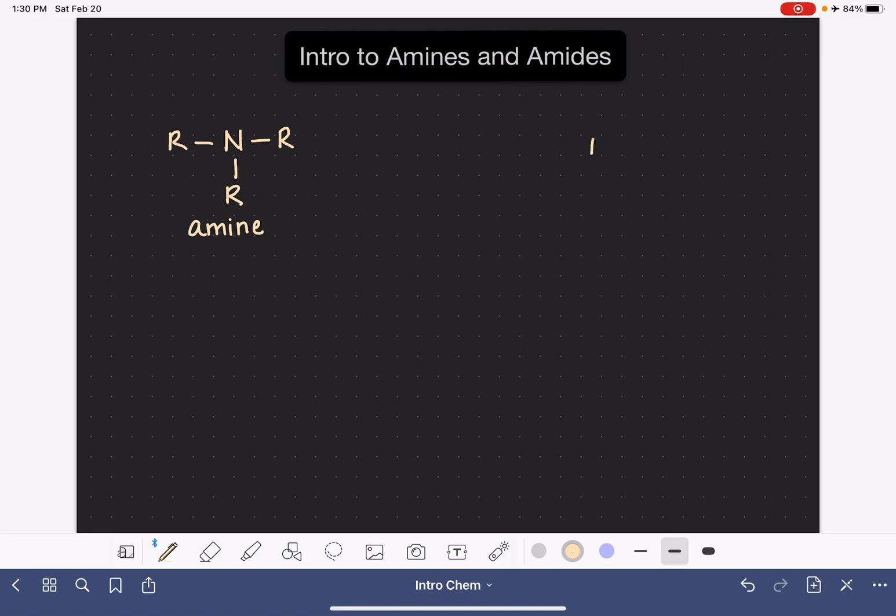The amide functional group is really similar. It is also a nitrogen atom, and the nitrogen atom is bonded to a carbon atom that is part of a carbon-oxygen double bond. So it's a very specific type of version of an amine. The other two bonds on the nitrogen atom could be either carbons or hydrogens, and then on the other side of the carbon atom, we could also have either a carbon or a hydrogen. So this is called an amide.